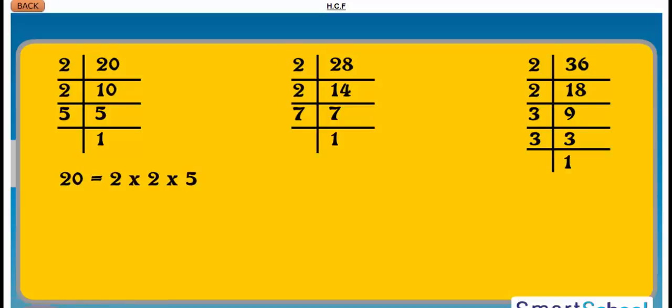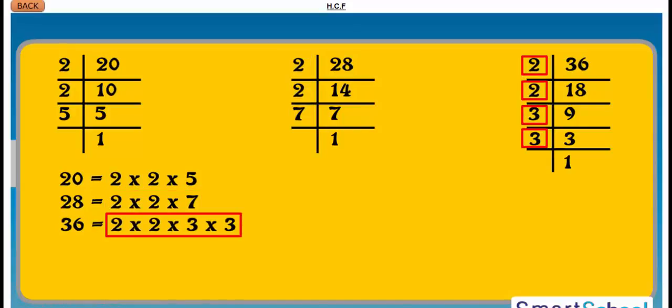We have 20 is equal to 2 into 2 into 5. 28 is equal to 2 into 2 into 7. 36 is equal to 2 into 2 into 3 into 3.